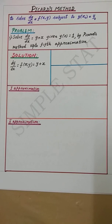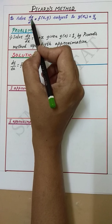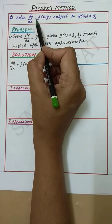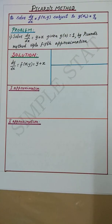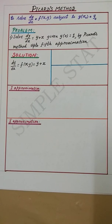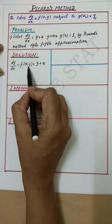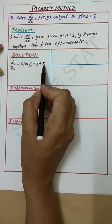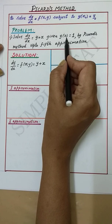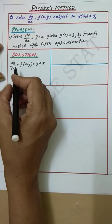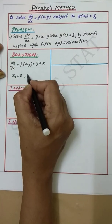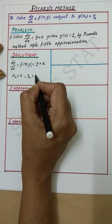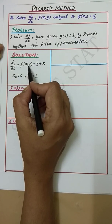Picard's method of successive approximation is used to solve the first-order ordinary differential equation dy/dx equal to f of xy, subject to the initial condition y(x₀) equal to y₀. Let's now proceed with the problem given: dy/dx, that is f of xy, is equal to y plus x, where y(0) is equal to 1. That is, the initial conditions are x₀ equal to 0 and y₀ equal to 1.